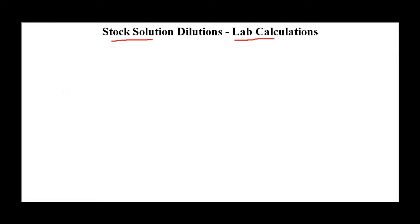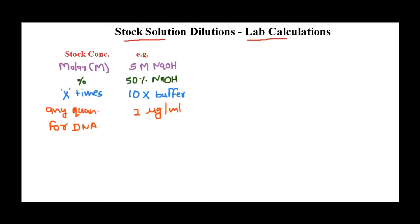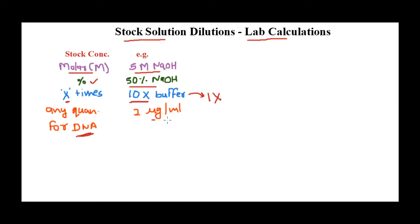When you're working with stock solutions, the concentration can be expressed in any of these following types. For example, we might have a stock solution with concentration expressed in terms of molarity — say 5 molar. It can be expressed as a percentage, like 50 percent. Sometimes it's expressed as a fold concentration, like 10x or 100x buffer that you need to dilute to 1x. Or it can be a measurable quantity like microgram per ml or nanogram per microliter when dealing with DNA.